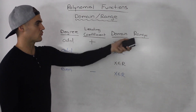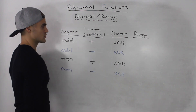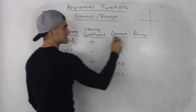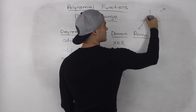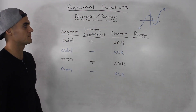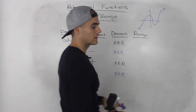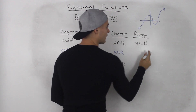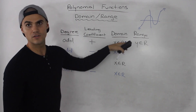In contrast to the domain, the range we have to determine on a case-by-case basis. For the first case — odd degree and positive leading coefficient — the end behavior is that the polynomial starts in quadrant 3 and ends in quadrant 1. The y values keep going on forever with no limit, so the range is also y is an element of real numbers.